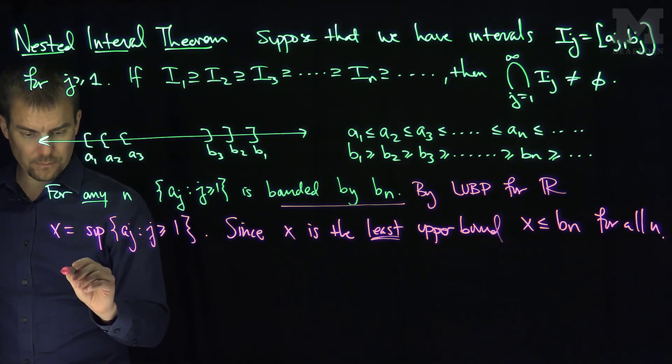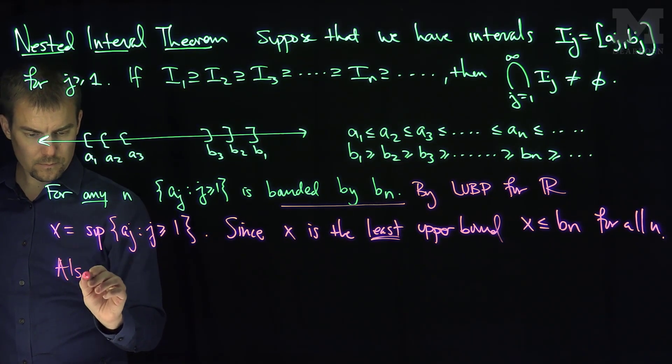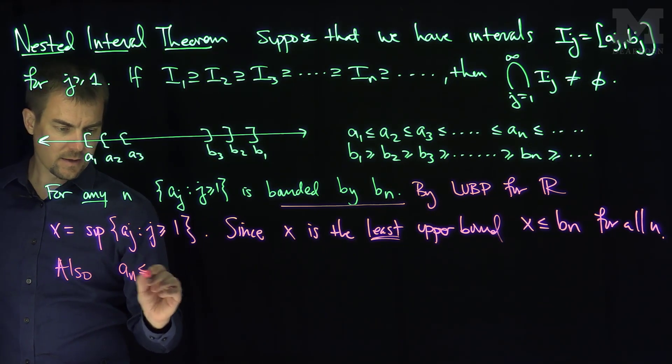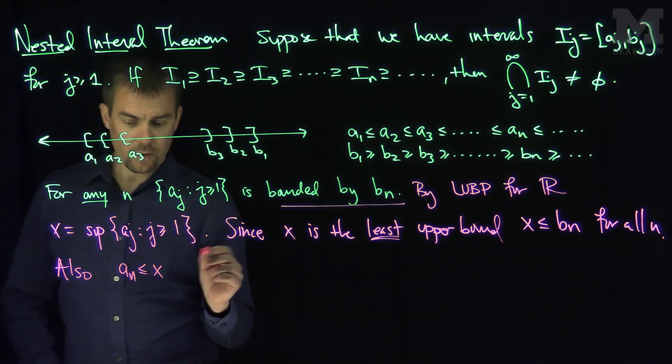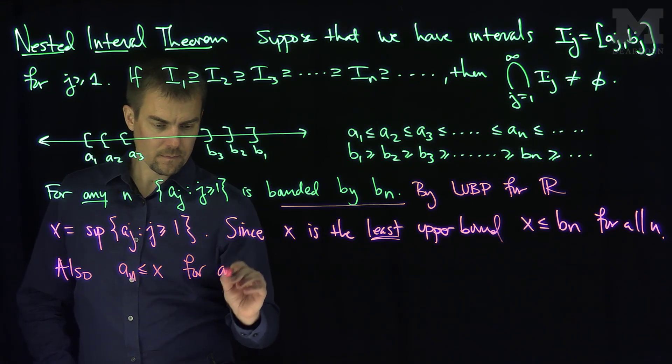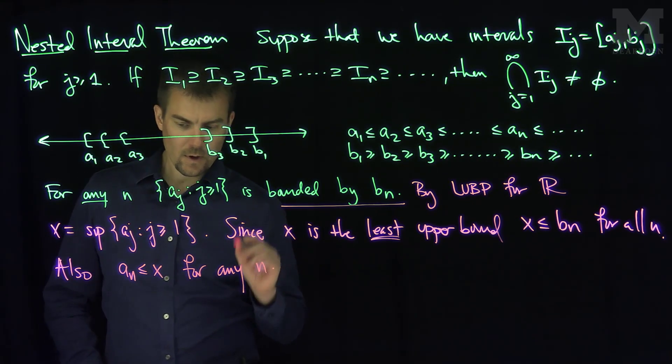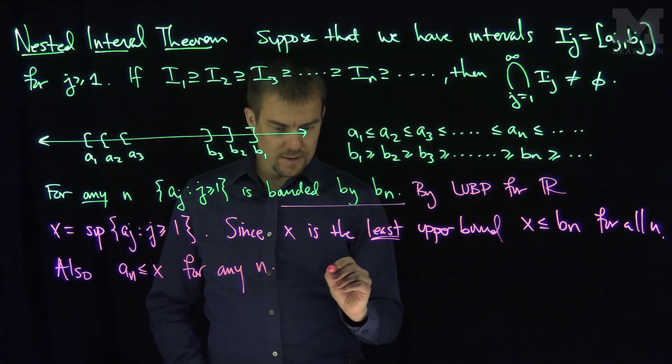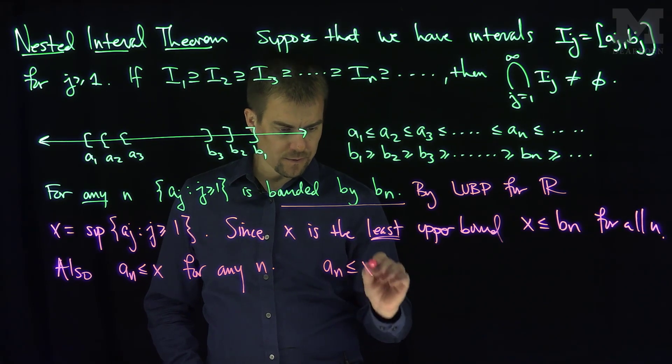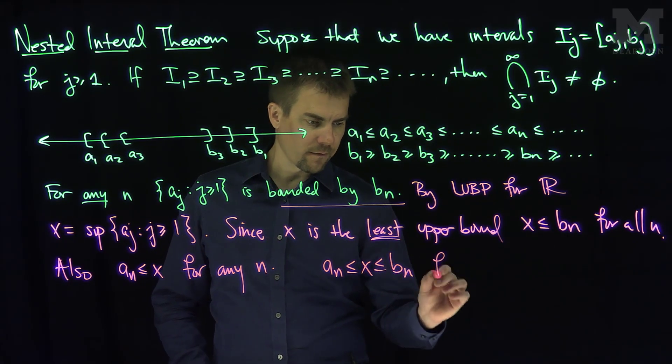we also have, also, an is less than or equal to x for any n. So our conclusion is that an less than or equal to x less than or equal to bn for all n.